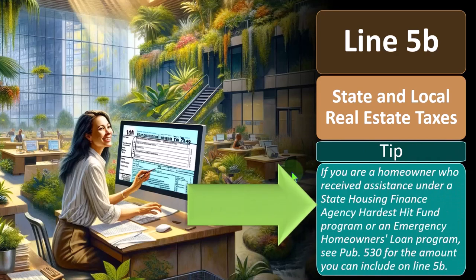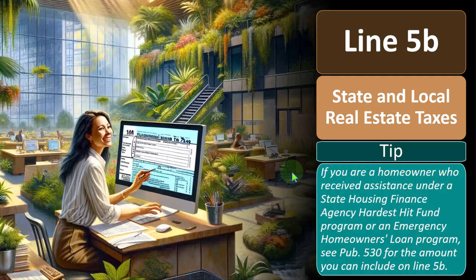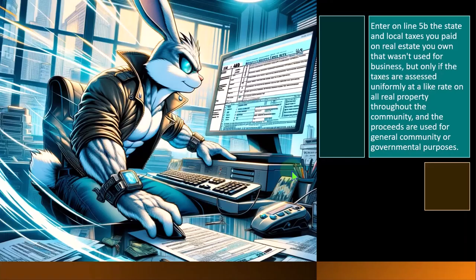If you are a homeowner who receives assistance under a state housing finance agency hardest hit fund program or an emergency homeowner's loan program, you can see Publication 530 for the amount you can include on line 5B.